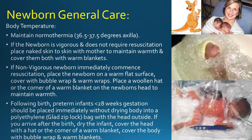Newborn general care — body temperature: maintain normothermia 36.5 to 37.5 degrees axilla. If the newborn is vigorous and does not require resuscitation, place naked skin to skin with mother to maintain warmth and cover them both with warm blankets — kangaroo care. If non-vigorous, immediately commence resuscitation, place the newborn on a warm flat surface, cover with bubble wrap and warm wraps, place a woollen hat or the corner of a warm blanket on the newborn's head. Following birth, preterm infants less than 28 weeks gestation should be placed immediately without drying into a polyethylene zip-lock bag with the head outside. If you arrive after the birth, dry the infant, cover the head with a hat or the corner of a warm blanket, cover the body with bubble wrap and warm blankets.